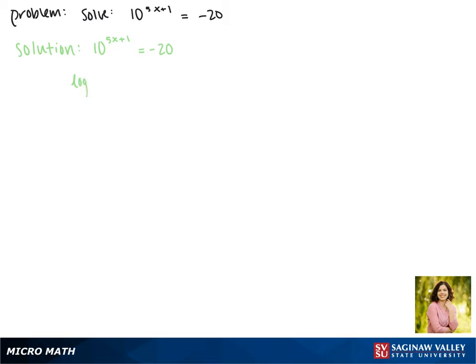So, the log of 10 to the 5x plus 1 equals the log of negative 20. Now, we can stop here because we can't do the log of negative 20. This negative makes it undefined — we can't plug in a negative value and get out an answer. So, there are no solutions.